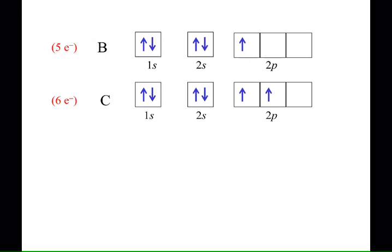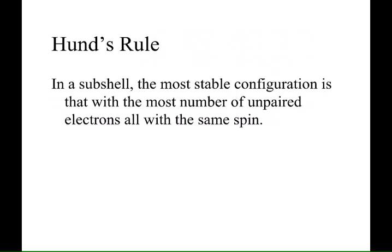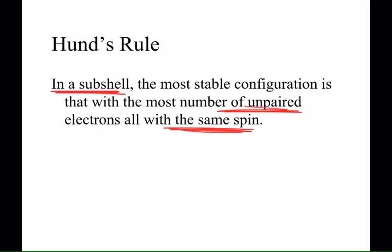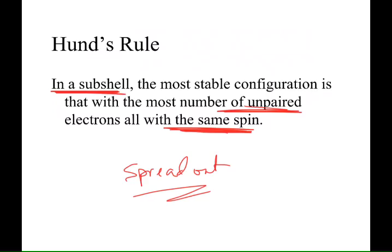Carbon is an example of that 6th electron scooting over. It didn't share an orbital with the 5th electron. It shared a degenerate orbital. Hund's rule says that the best way to do that is if you have electrons that are unpaired. And those unpaired electrons will be both pointed in the same direction, same spin. That's Hund's rule. I call this the spread out rule. Electrons are going to spread out if they can.